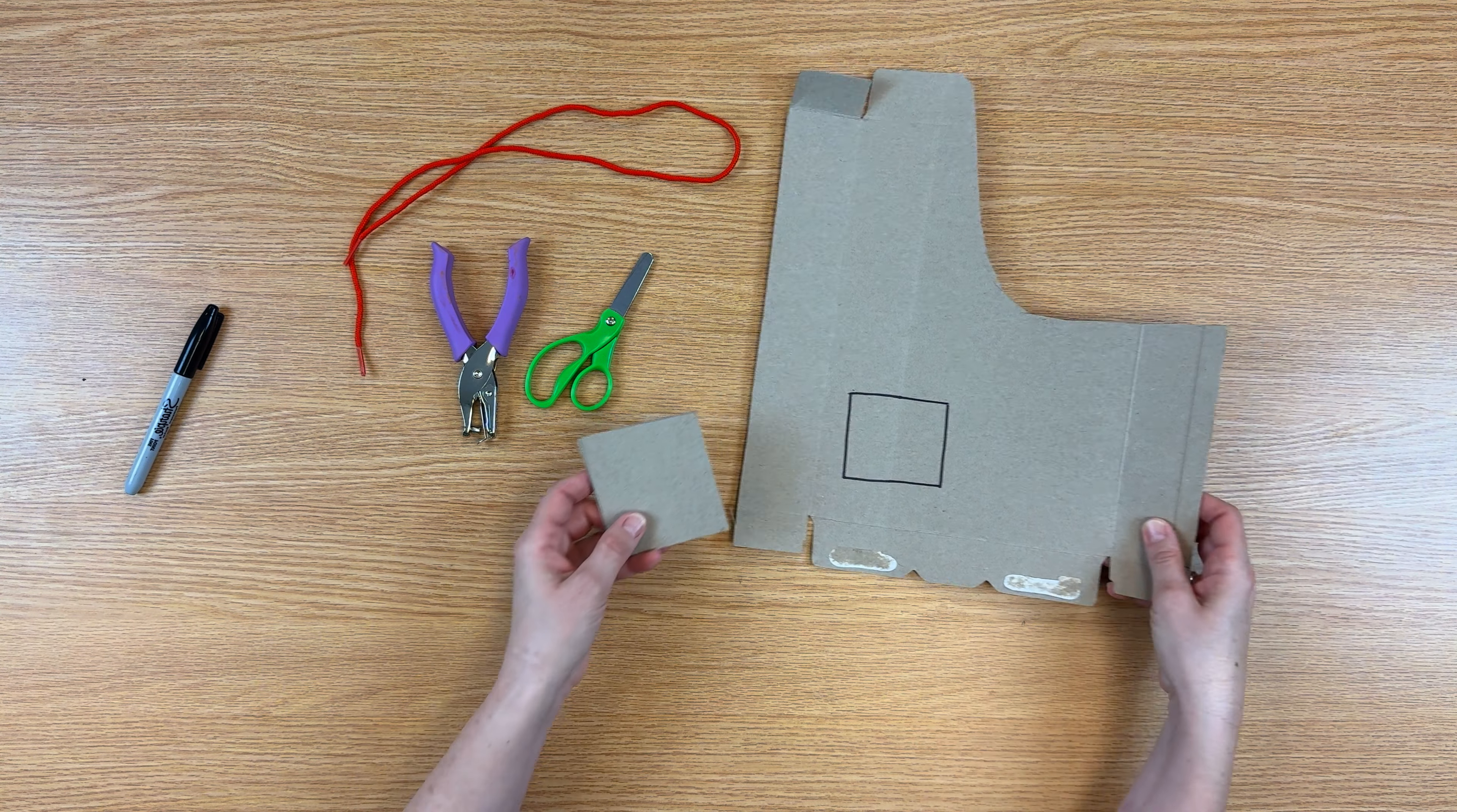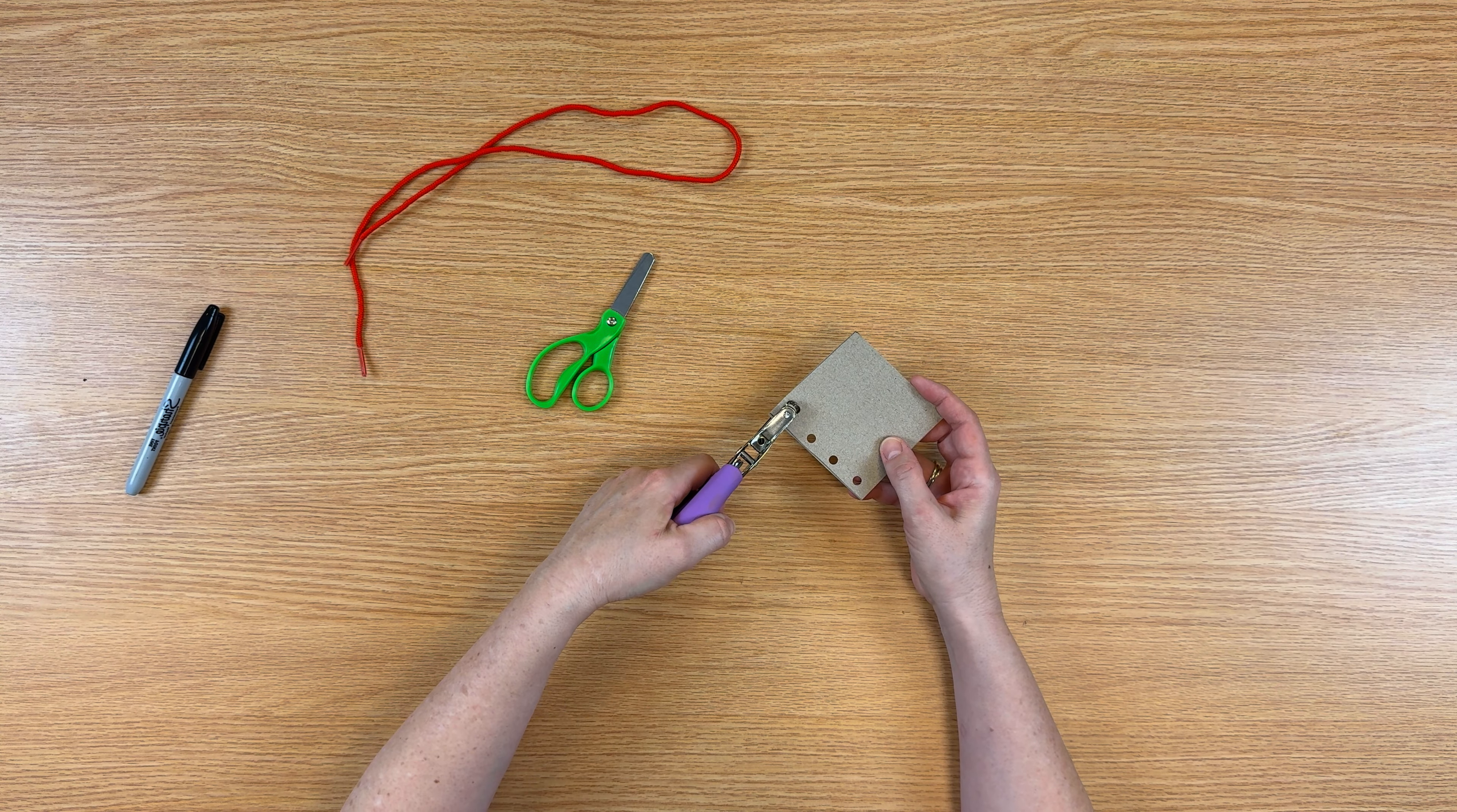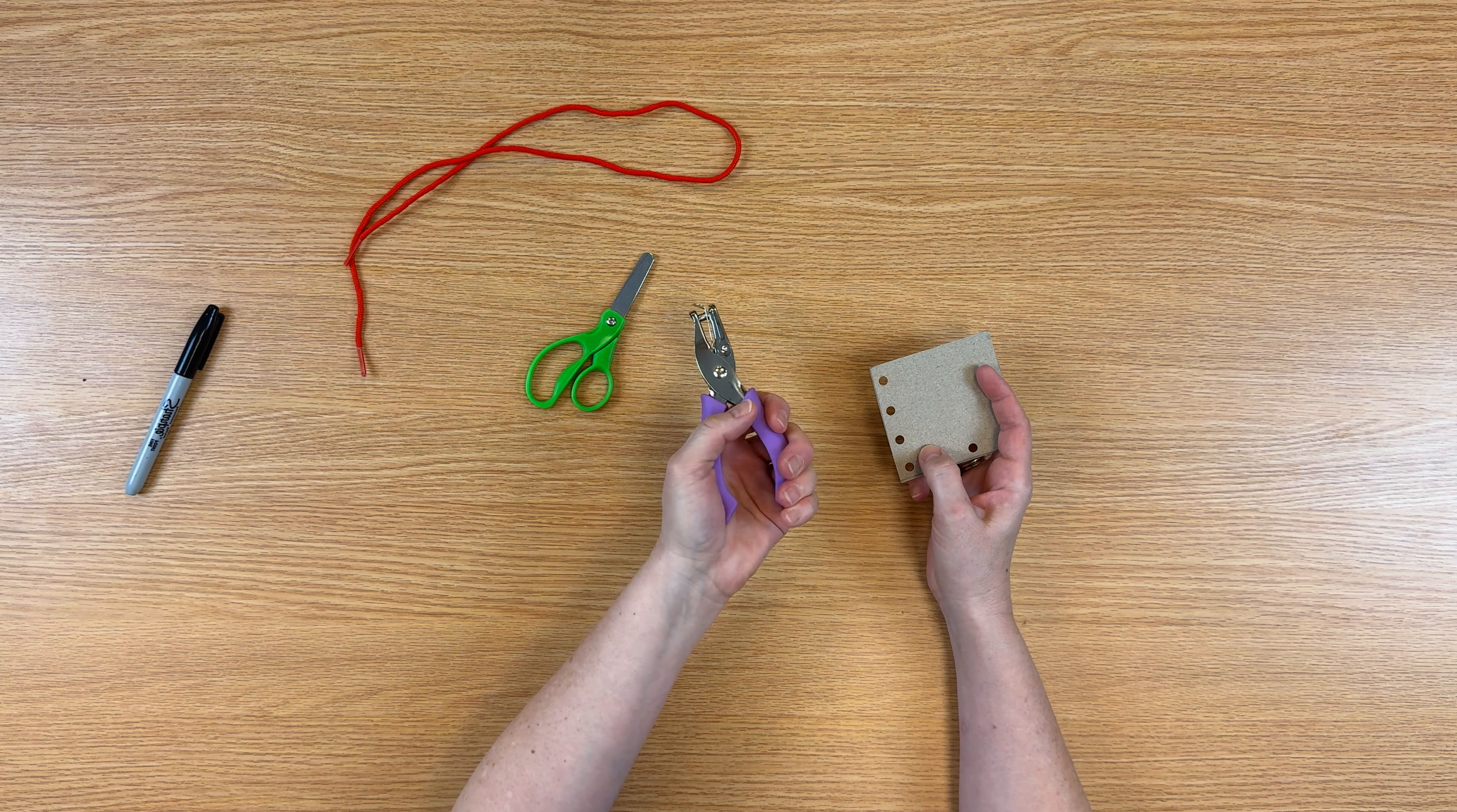Once you have your shape all cut out, you're going to go around the edge punching out a hole about every inch or so apart. If you don't have a hole punch, you can have an adult carefully poke the holes with a sharper pair of scissors. Again, I encourage you to have your child do the punching because this is really good for building their grip.